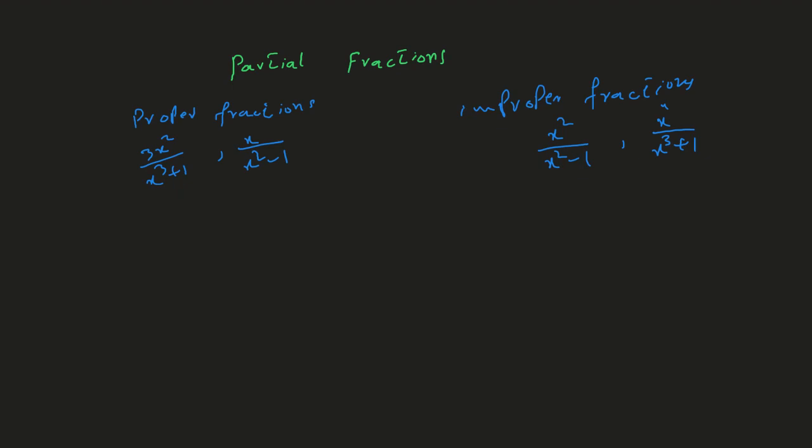If we have a fraction in terms of p(x) and q(x) — two polynomials, one in the numerator and the second in the denominator — if the degree of the polynomial in the numerator is less than the degree of the polynomial in the denominator, that is called a proper fraction.